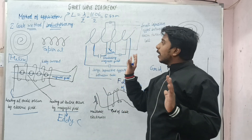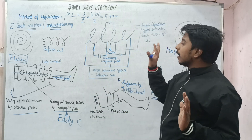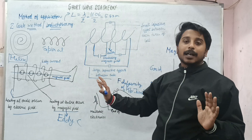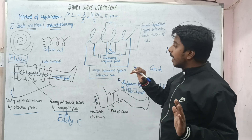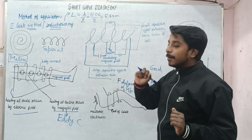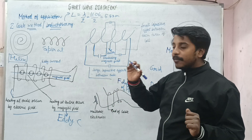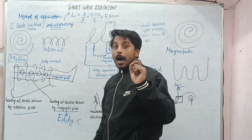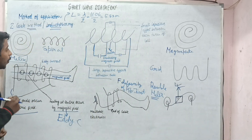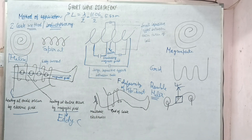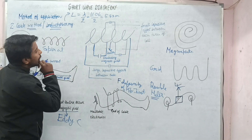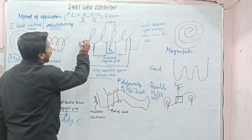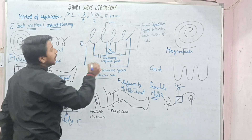So, this covers the whole cable method or inductothermy. You need to understand how heating is occurring, where the magnetic field is, and where the electric field is. Another important point from this diagram: the starting of the cable is point one and this is the ending of the cable, with first, second, third, and fourth coils.